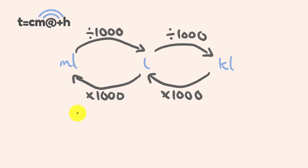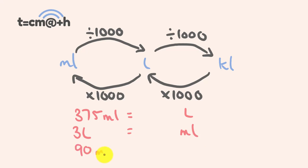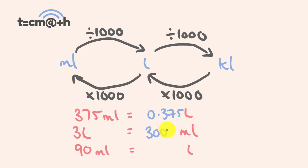So if we have a 375 mil can of Coke, how much is that in liters? What about 3 liters — how much is that in mils? And what's 90 mil in liters? For 375 mils to liters, we divide by 1,000, moving the decimal place three times, giving us 0.375 liters. For 3 liters to milliliters, we multiply by 1,000 — 3 times 1,000 is 3,000 mil. For 90 mil to liters, dividing by 1,000 moves the decimal place three times, giving us 0.09 liters.